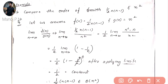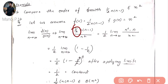Now apply the definition: limit n tends to infinity of f(n) divided by g(n), which equals limit n tends to infinity of (1/2)·n·(n−1) divided by n². Take the constant 1/2 outside.